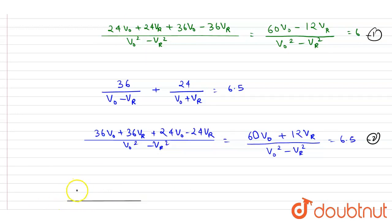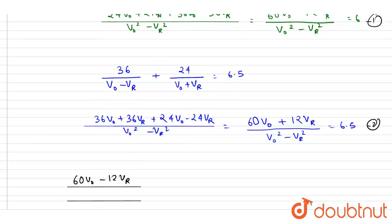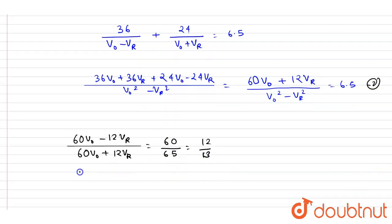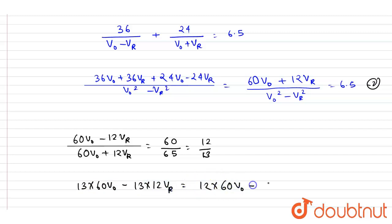Dividing equation 1 by equation 2 gives: (60 v-naught minus 12 vr) divided by (60 v-naught plus 12 vr) equals 6 divided by 6.5, which is 12 by 13. Cross-multiplying: 13 times (60 v-naught minus 12 vr) equals 12 times (60 v-naught plus 12 vr).